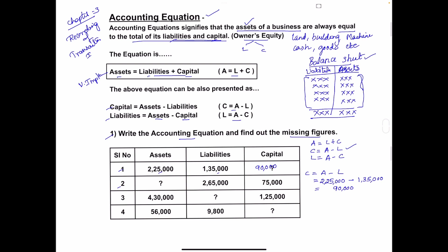In the second example, assets are not given but liabilities and capital are provided. So we use the first formula: A = L + C. Liabilities are 2,65,000 plus capital of 75,000, giving a total of 3,40,000. So the assets amount is 3,40,000.